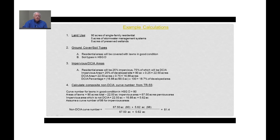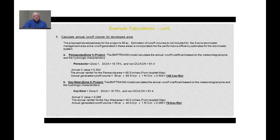Assuming this project is in Pensacola, which is in Zone 1, with a DCIA of 18.75% and a non-DCIA curve number of 81.4, the BMP Trains model predicts an annual C value of 0.304. From the annual rainfall isopleth maps available in the BMP Trains model, annual rainfall for the Pensacola area is about 65.5 inches. So the generated annual runoff volume is 90 acres times 65.5 inches times 0.304, which gives approximately 149 acre-feet per year.